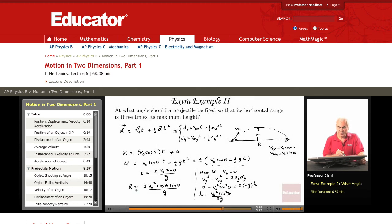So if I want the range to be 3 times the maximum height, I can write 2V0 squared cosine theta sine theta over G. This is equal to 3V0 squared sine squared theta over G.